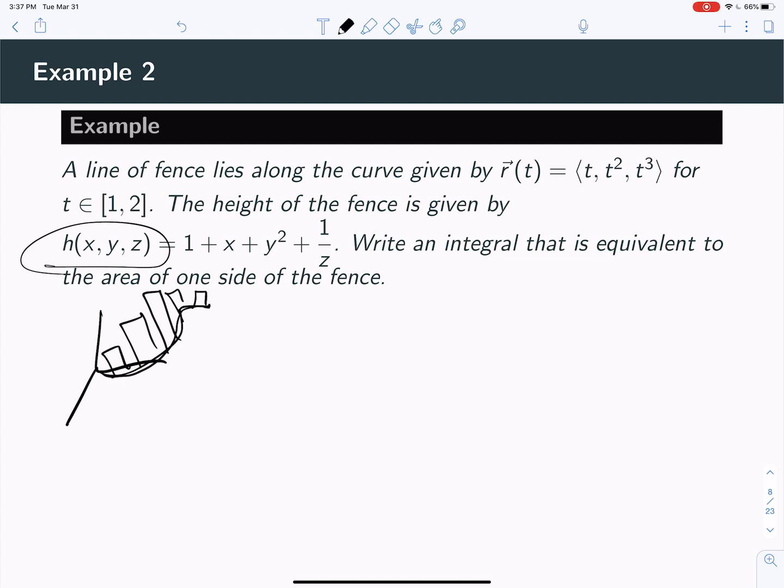So what we're going to imagine here is the function gives you the height of the fence along this curve. Well, if you have height times length, that's going to be area. So the line integral is actually going to give you an area of one side of the fence here.